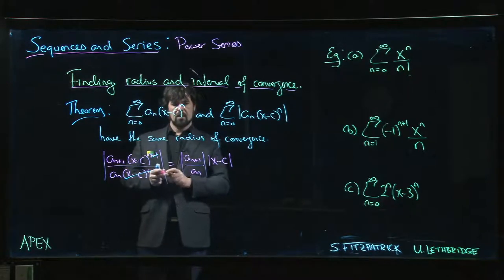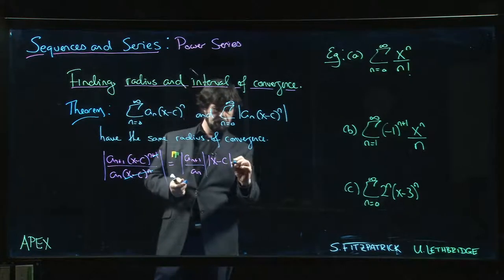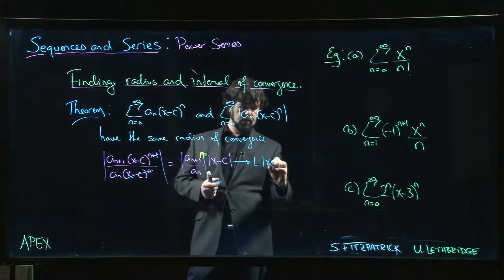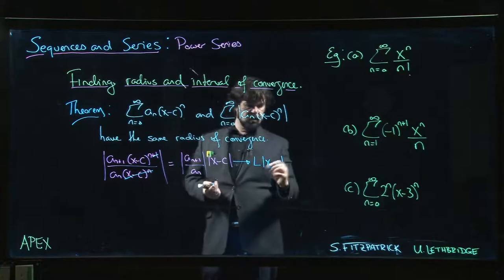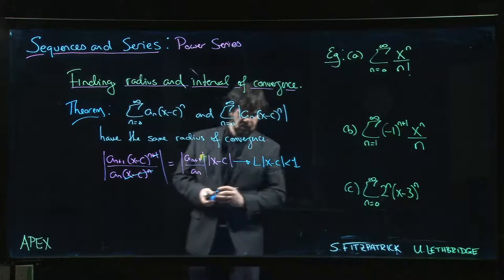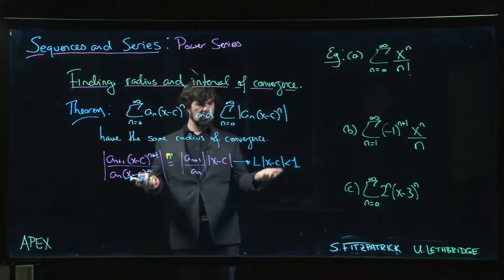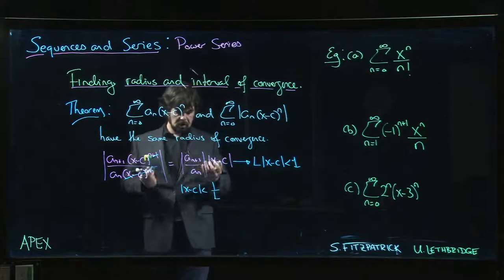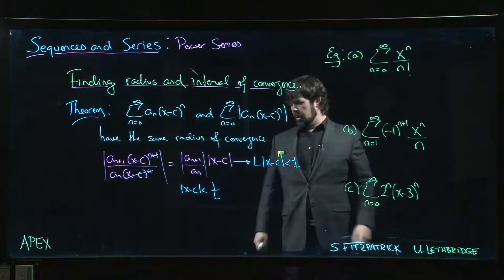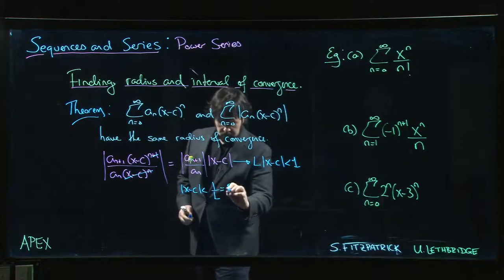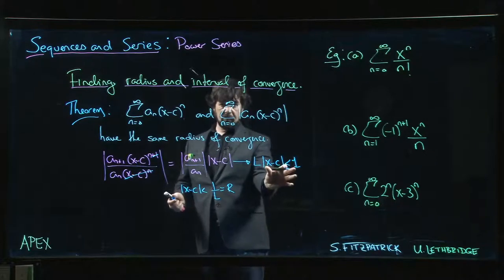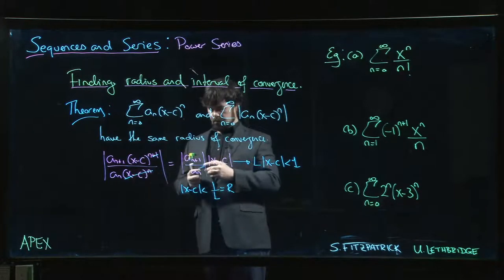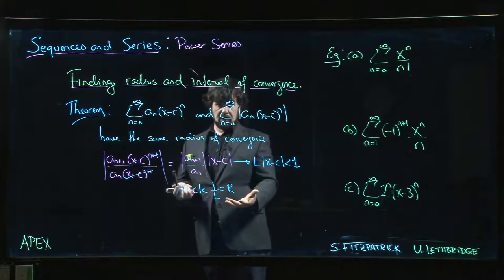Typically what happens is you let n go to infinity, and the ratio a_{n+1}/a_n approaches some limit L. So you get L times |x minus c|. The ratio test gives convergence when the whole expression is less than 1, so you need |x minus c| to be less than 1/L. If L equals 0, this is satisfied for all values of x — that's the case of infinite radius of convergence. If L is some finite nonzero limit, then 1/L gives you the radius of convergence.